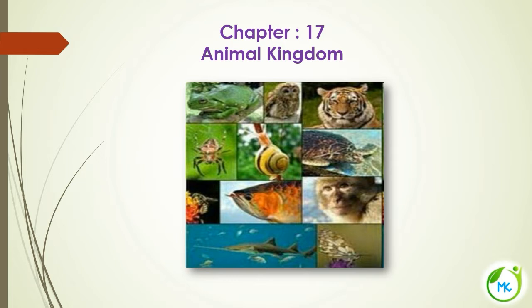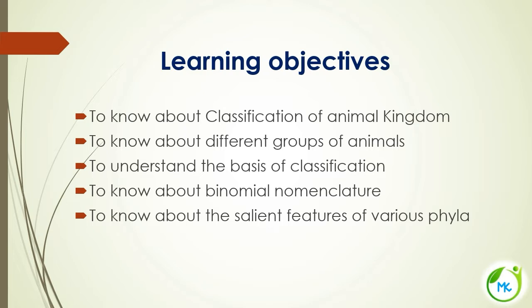Hello everyone, welcome to biology class. In this class we are going to see 9th Standard Biology, Chapter 17, Animal Kingdom. After knowing this lesson, we will come to know about the classification of animal kingdom and the different groups of animals, the basis of their classification, the binomial system of nomenclature, and the salient features of various phyla of animal kingdom. Let's see the introduction.